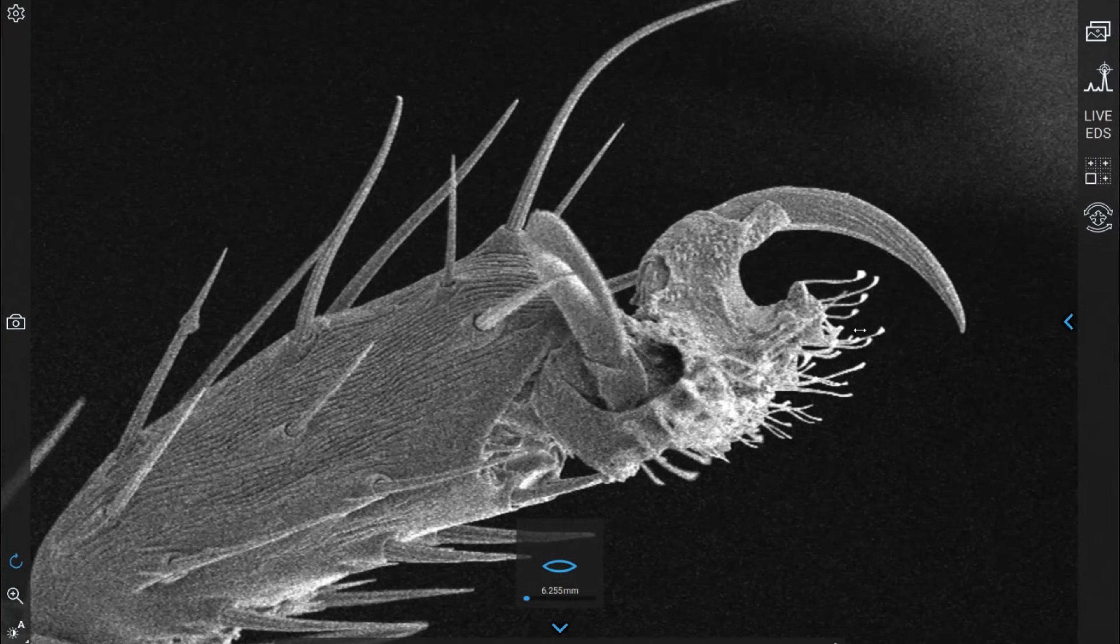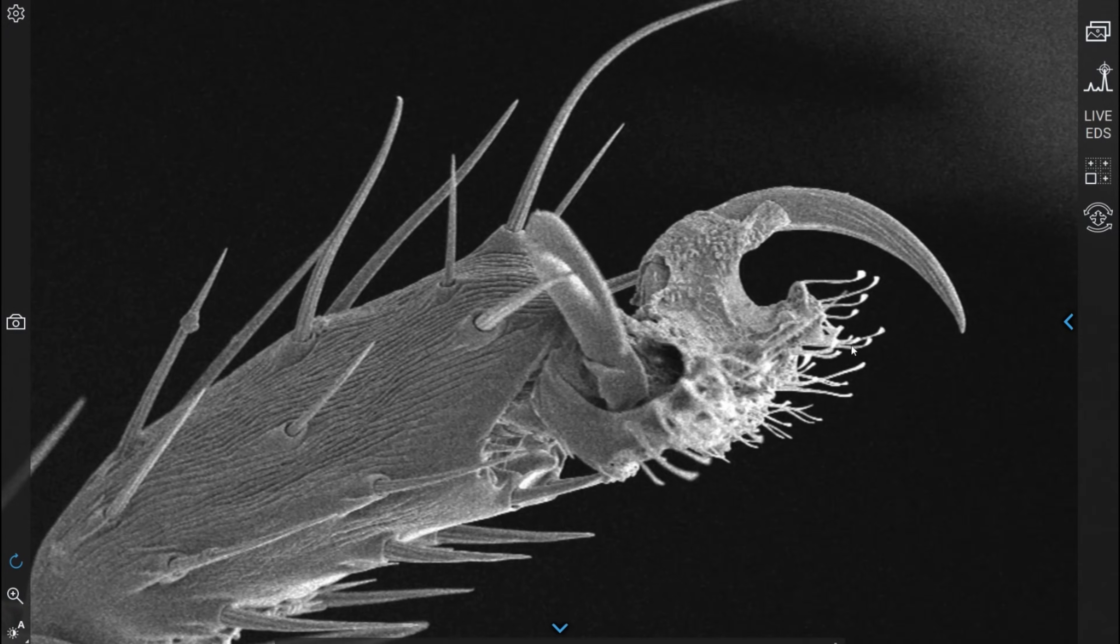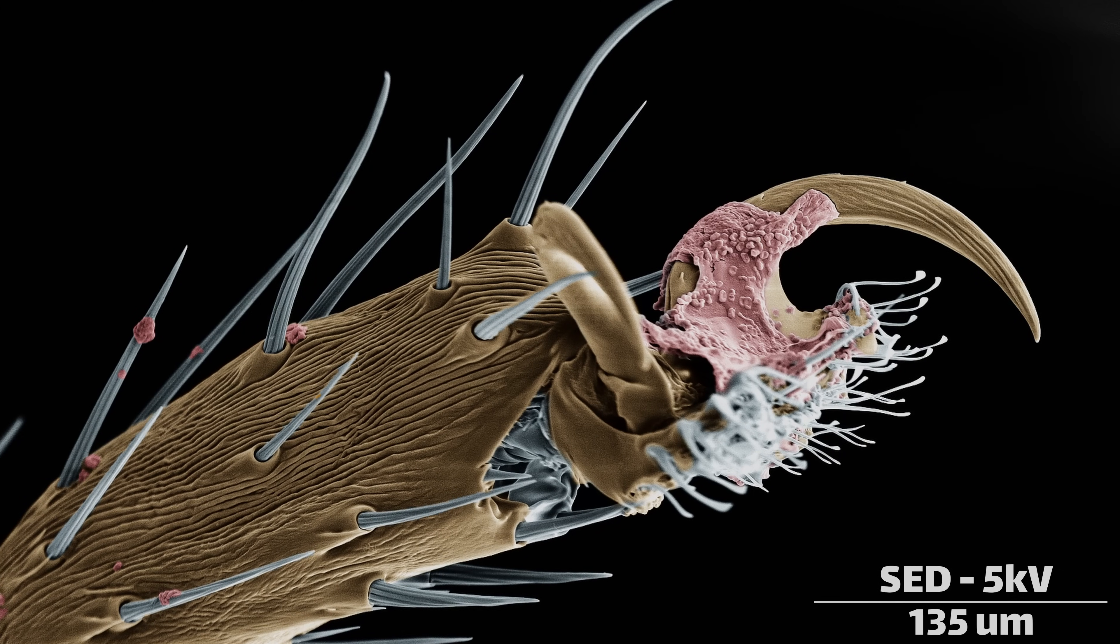These fine hairs secrete a sticky adhesive, which allows Drosophila to land on just about anything, and walk anywhere they wish to go, even upside down on the ceiling.